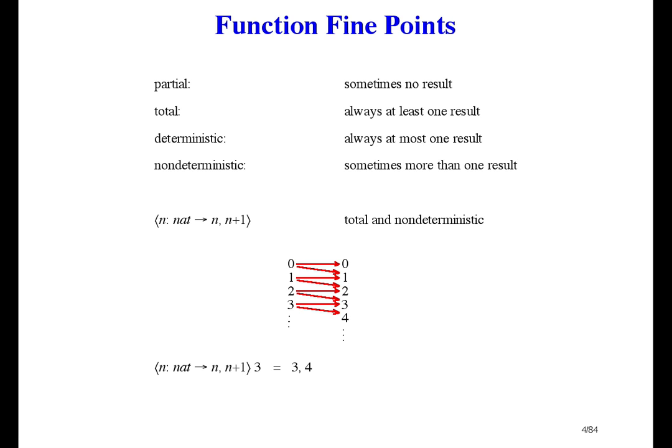You could say that's just one result, namely the bunch consisting of 3 and 4. But that's what a non-deterministic function means. And a partial function means the result is null for some domain elements. That's just terminology.